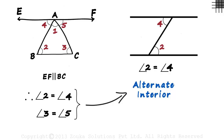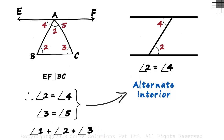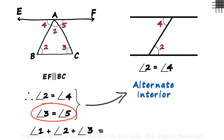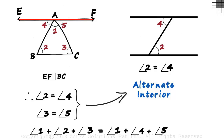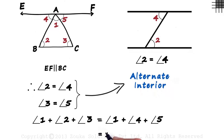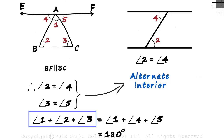What we are interested in is the sum of these three angles: angle 1 plus angle 2 plus angle 3. Since angle 2 is equal to angle 4 and angle 3 is equal to angle 5, we can write this as angle 1 plus angle 4 plus angle 5 — we just replaced angles 2 and 3 with angles 4 and 5. Look at the figure and see where angles 1, 4, and 5 are placed. EF is a straight line, and since EF is a straight line, the sum of angle 1, angle 4, and angle 5 equals 180 degrees. It implies that the sum of angles 1, 2, and 3 will also equal 180 degrees.